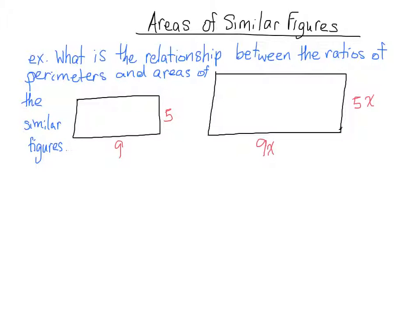The best way to do that would be to figure out the area of each figure. The area of the first figure is base times height, so that is 9 times 5, so the area of the first figure is 45 units squared.